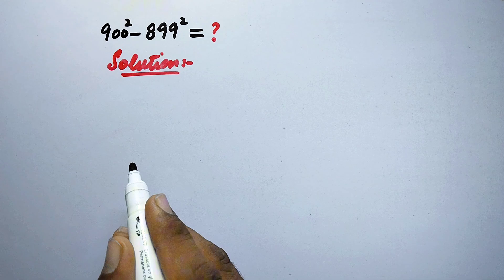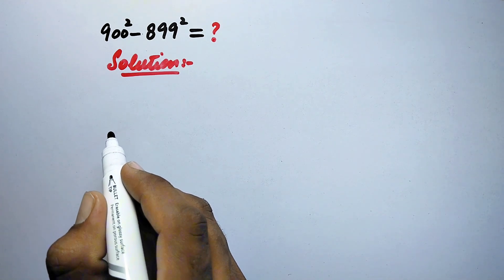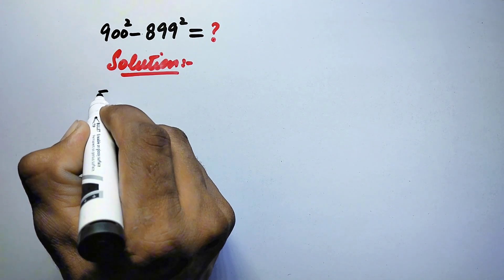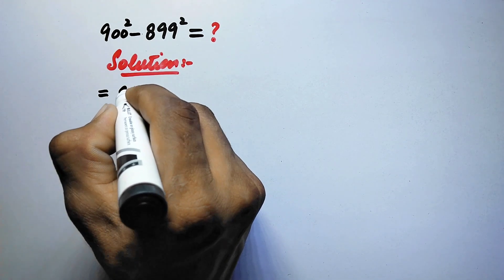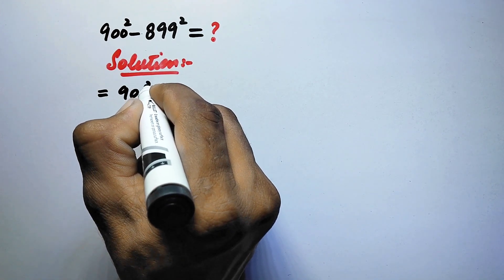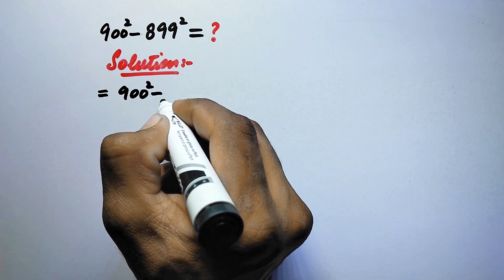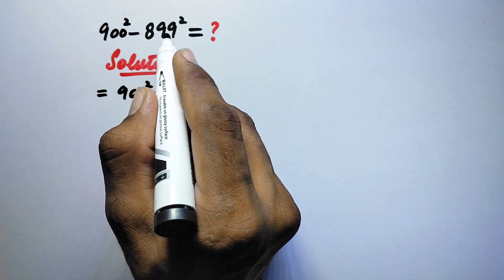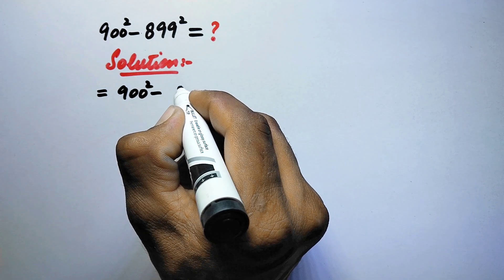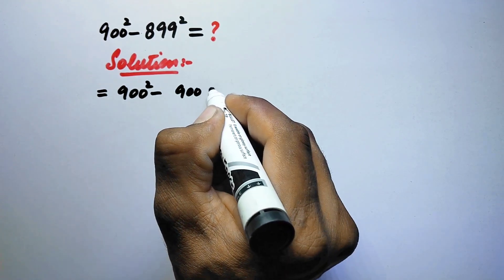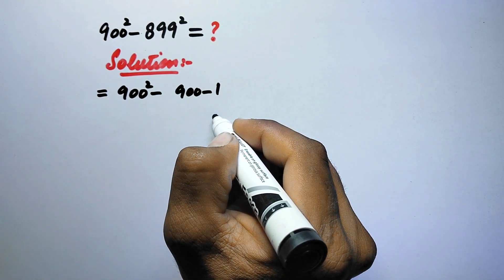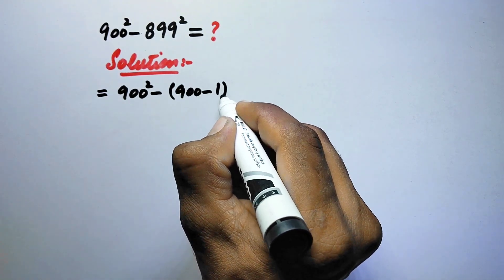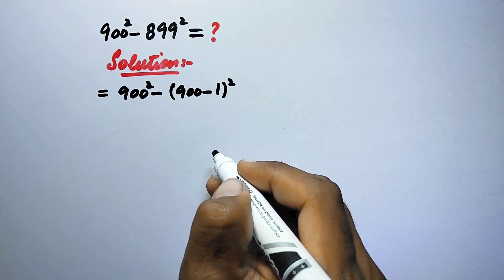So here in the first step of the solution, we can write this term as 900² minus 899, which can be written as (900 - 1)², the power will be whole square.